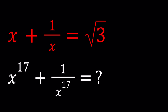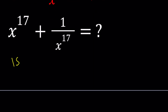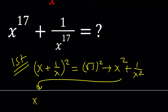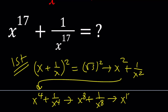I'll be presenting two methods. For the first method, my goal will be to start with this, and by squaring both sides, find x squared plus 1 over x squared, and then by squaring that, get x to the 4th plus 1 over x to the 4th, from that x to the 8th plus 1 over x to the 8th, and eventually x to the 16th plus 1 over x to the 16th. These are all numerical values — by squaring both sides you can get that.